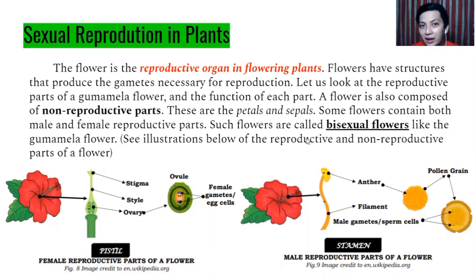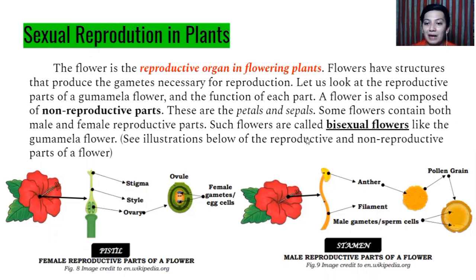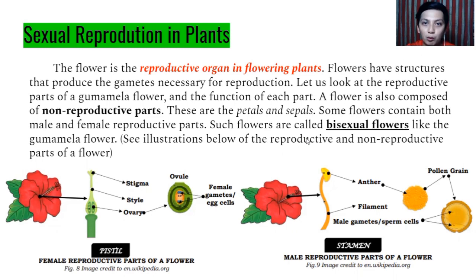On the other hand, the male part of the gumamela or hibiscus flower is the stamen. The stamen is composed of the anther, the filament, and the pollen grain. The pollen grain serves as the sperm cell or the seed to fertilize the flower and produce fruit.